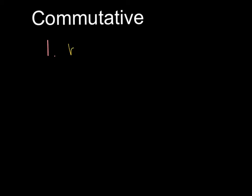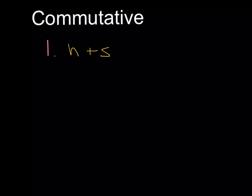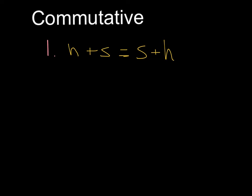A way to think about the commutative property is this: when you get up and go to school, you start at home and then go to school. From there, you're going to leave school and go back home. That's the commutative property — order doesn't matter, the distance would be the same.